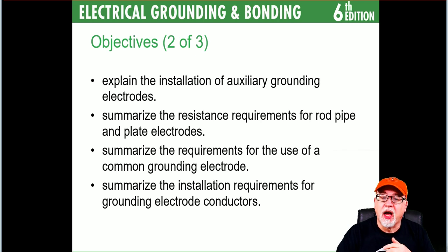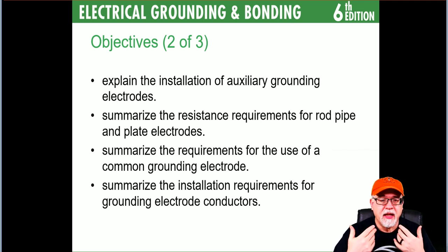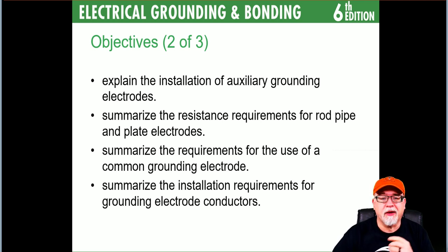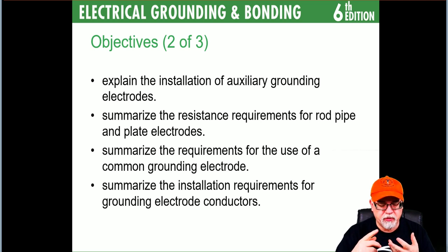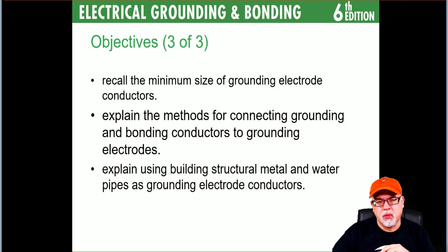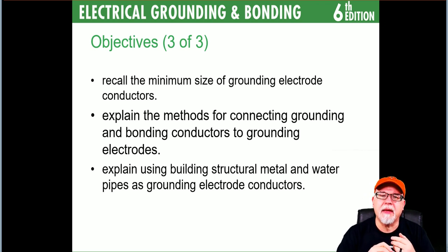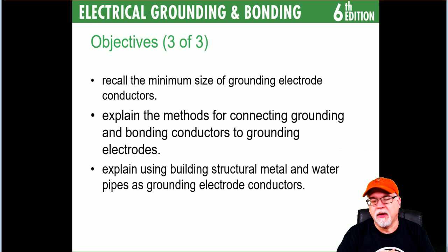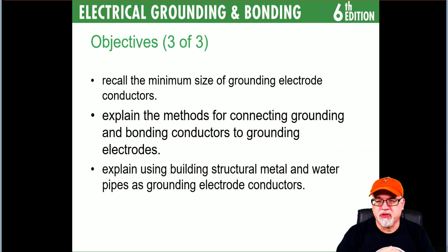You'll summarize requirements for the common grounding electrode and how to size it, summarize installation requirements for grounding electrode conductors going to a concrete encased electrode, rod, pipe, plates, ground ring, or in-ground system. You'll recall the minimum size for grounding electrode conductors, explain connection methods in accordance with 250.8, and understand using building structural metal and water pipes as grounding electrode conductors.